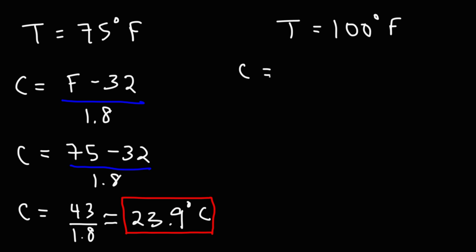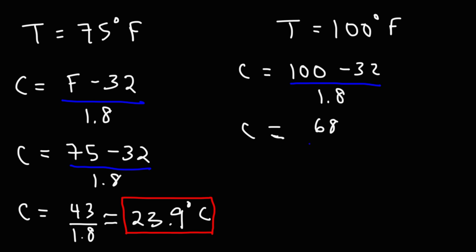Now let's calculate the Celsius temperature when it's 100 degrees outside. So this is going to be 100 minus 32, divided by 1.8. 100 minus 32 is 68, and 68 divided by 1.8 is 37.7. So that's the Celsius temperature when it's 100 degrees Fahrenheit outside.